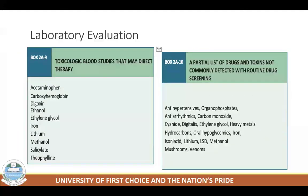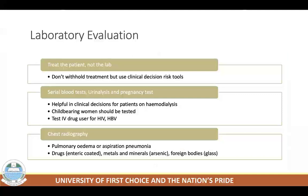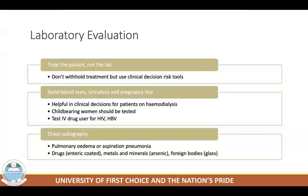Laboratory evaluation is important for identifying and managing poisoned patients. Routine studies include complete blood count, serum electrolytes, glucose, BUN, creatinine, calcium, urinalysis, prothrombin time, pulse oximetry, end-tidal CO2 monitoring, and 12-lead ECG. Arterial blood gas analysis is necessary for evaluating respiratory status and acid-base abnormalities, particularly in comatose or seizure patients.